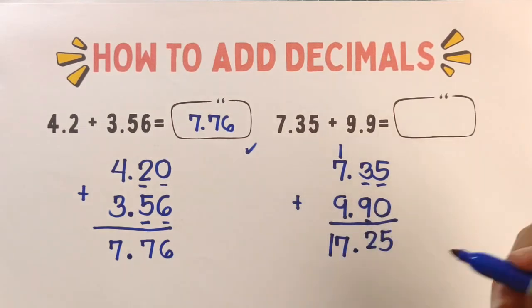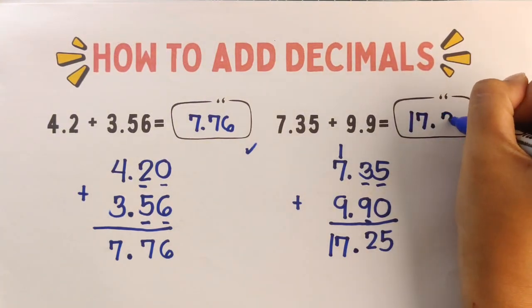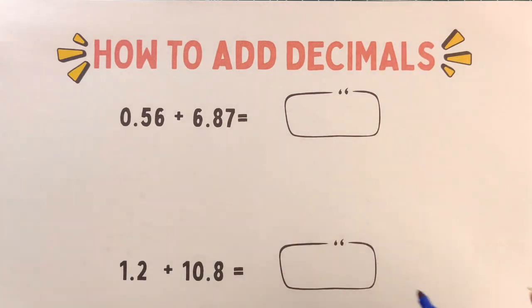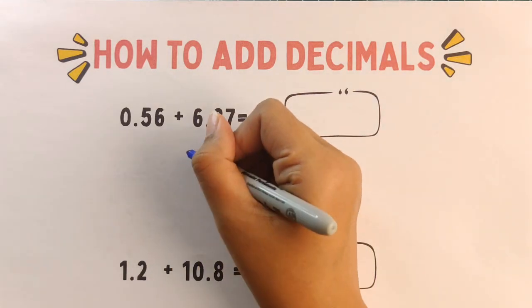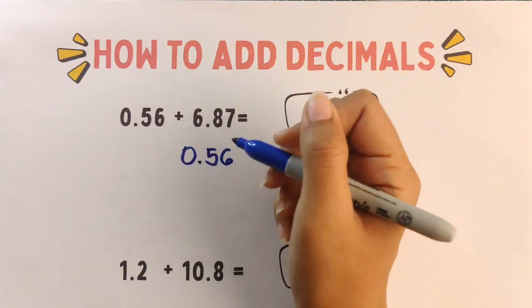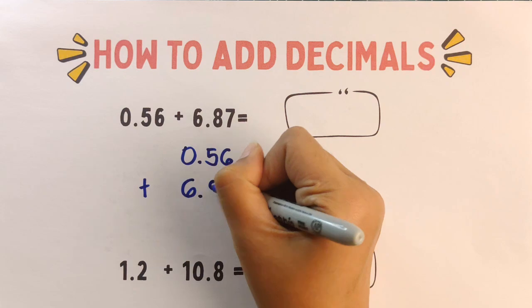Next, another example. We have 0.56 plus 6.87.